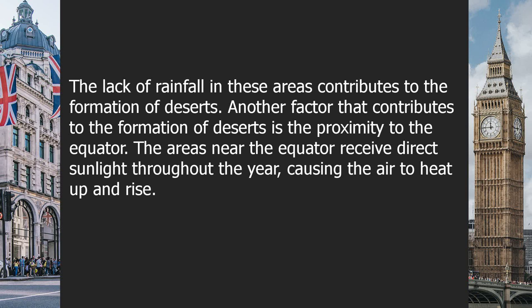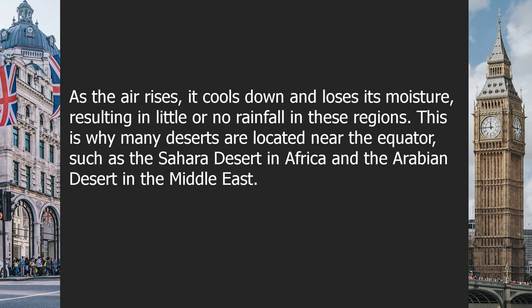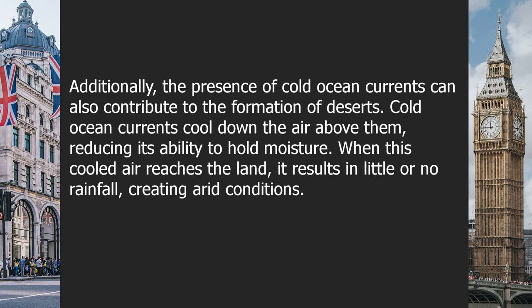Another factor that contributes to the formation of deserts is the proximity to the equator. The areas near the equator receive direct sunlight throughout the year, causing the air to heat up and rise. As the air rises, it cools down and loses its moisture, resulting in little or no rainfall in these regions. This is why many deserts are located near the equator, such as the Sahara Desert in Africa and the Arabian Desert in the Middle East.